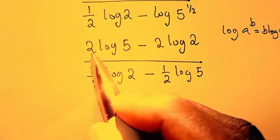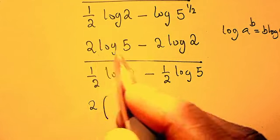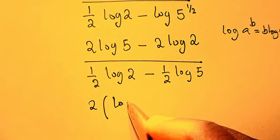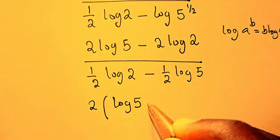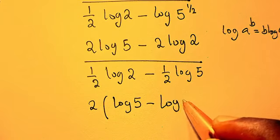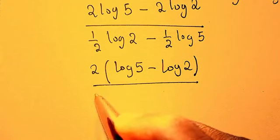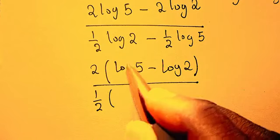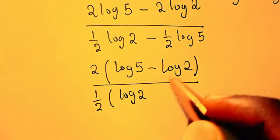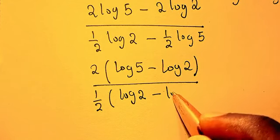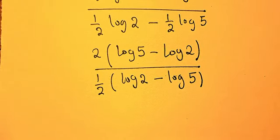So now from there, the next thing we're going to do - you can see here 2 is here, 2 is here, I can factorize 2 out. So now 2 log 2 divided by 2, what I'm going to be left with is log 5, and 2 log 2 divided by this, so we're going to be having minus log 2, divided by here I have 1 over 2 log 2, log 2 then minus log 5. So now from here there's something I want us to do.